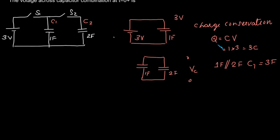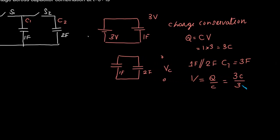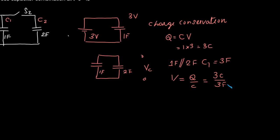The charge will remain the same. Now the capacitance has changed. Voltage V is Q divided by C, that is 3 coulombs divided by 3 farad, which equals 1 volt.